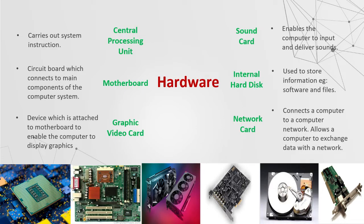The CPU carries out system instructions. The motherboard is a circuit board which connects to the main components of the computer system. The graphic video card is a device attached to the motherboard to enable the computer to display graphics. The sound card enables the computer to input and deliver sounds. The internal hard disk is used to store information such as software and files. The network card connects the computer to a network which allows a computer to exchange data.